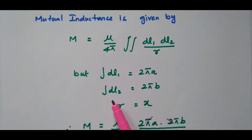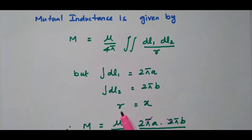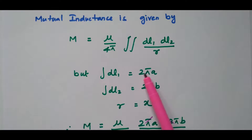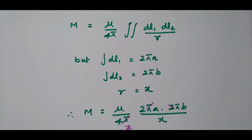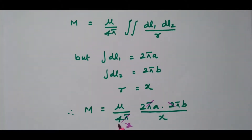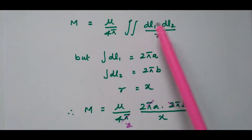Similarly, DL2 equals L2, which is the circumference of the second loop: 2πb. Here R is taken as x, the center-to-center distance between the circular current loops. We now replace integral DL1 with 2πa, integral DL2 with 2πb, and R with x in the expression. So M equals μ divided by 4π, times 2πa times 2πb divided by x.